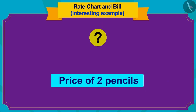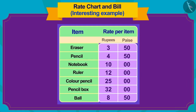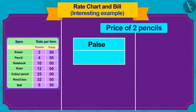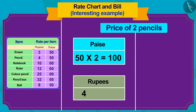First, we will find the price of 2 pencils. The price of 1 pencil is 4 rupees 50 paise. So how much will 2 pencils cost? First, we multiply the paise number 50 by 2, which gives 100 paise. Now we will multiply the rupees number 4 by 2, and that would be 8 rupees.